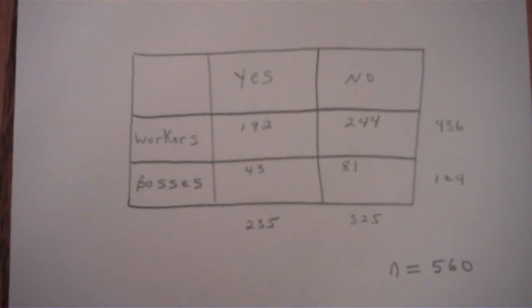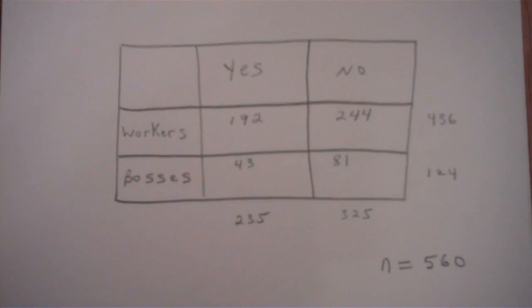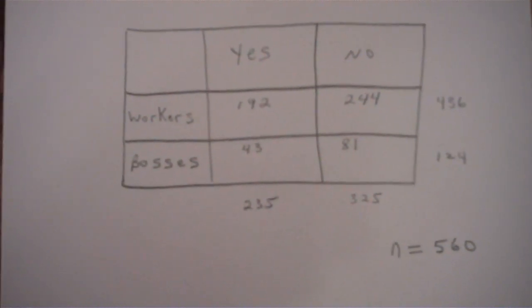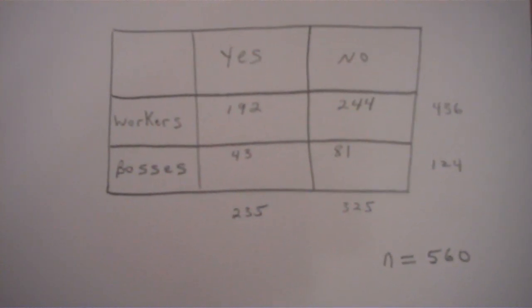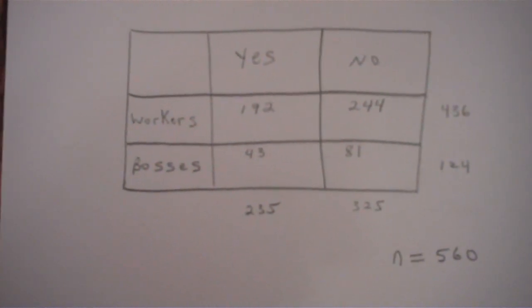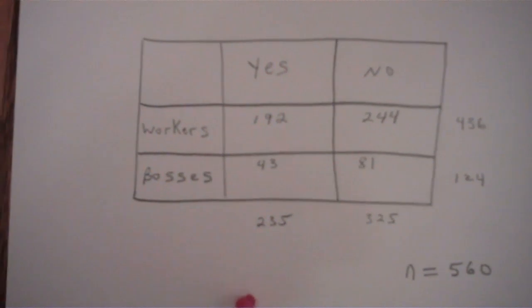I want to do a chi-square test of independence, and to do that I need to compute the expected frequencies. So I want to show how to compute the expected frequencies for this 2x2 contingency table.